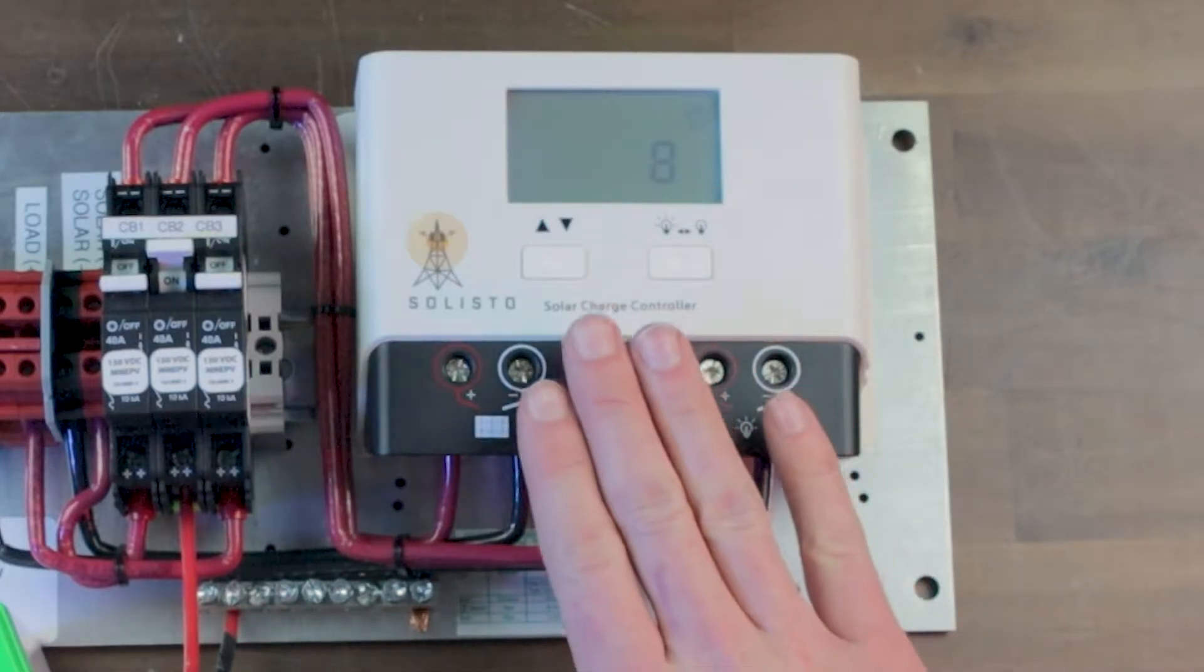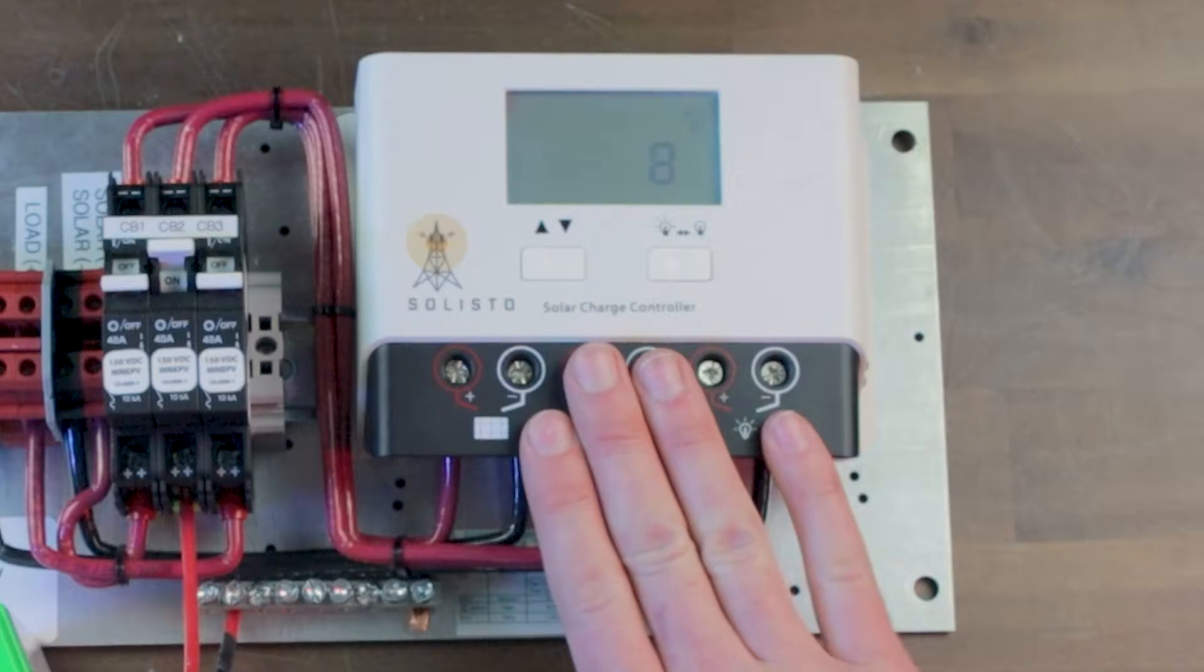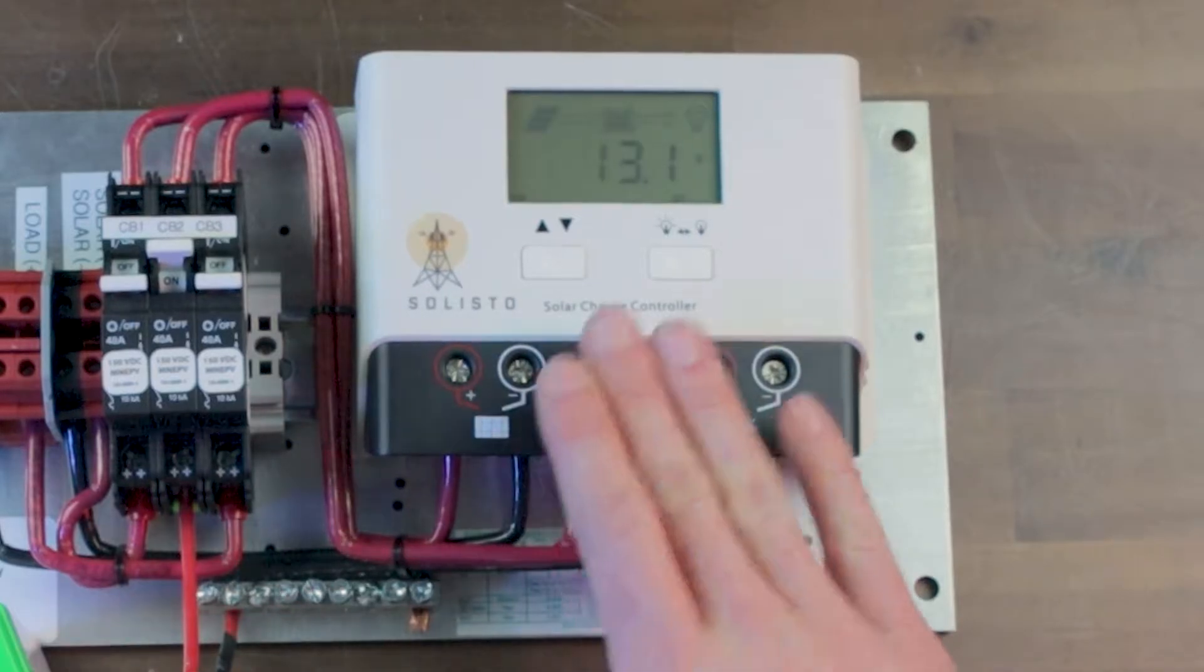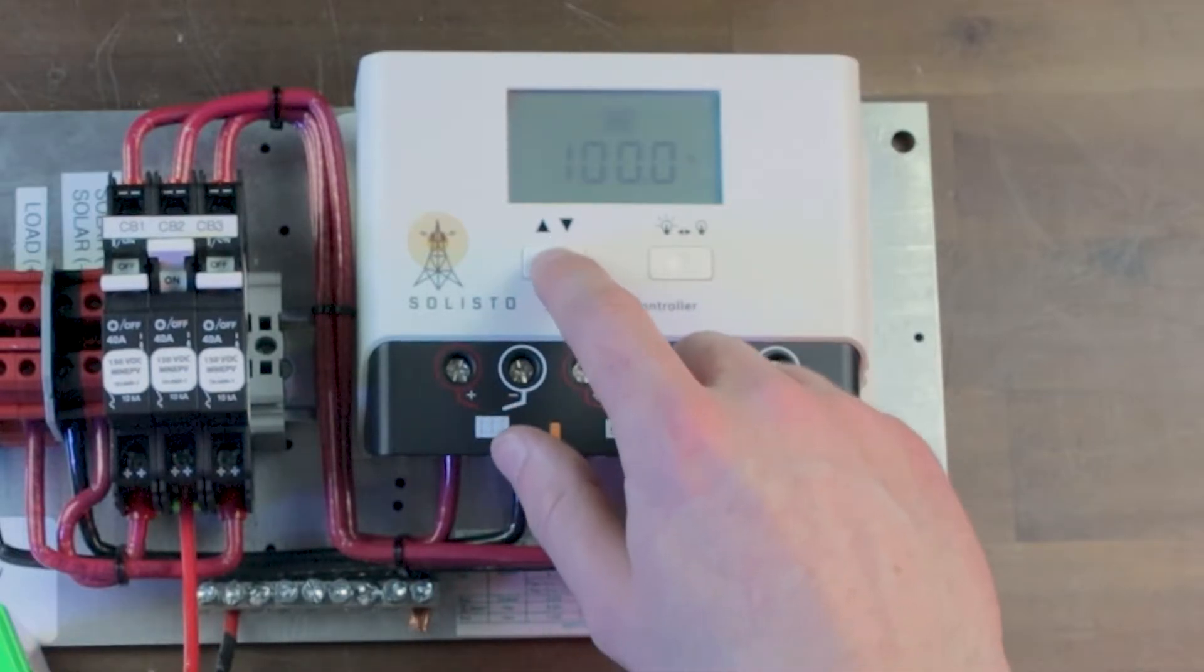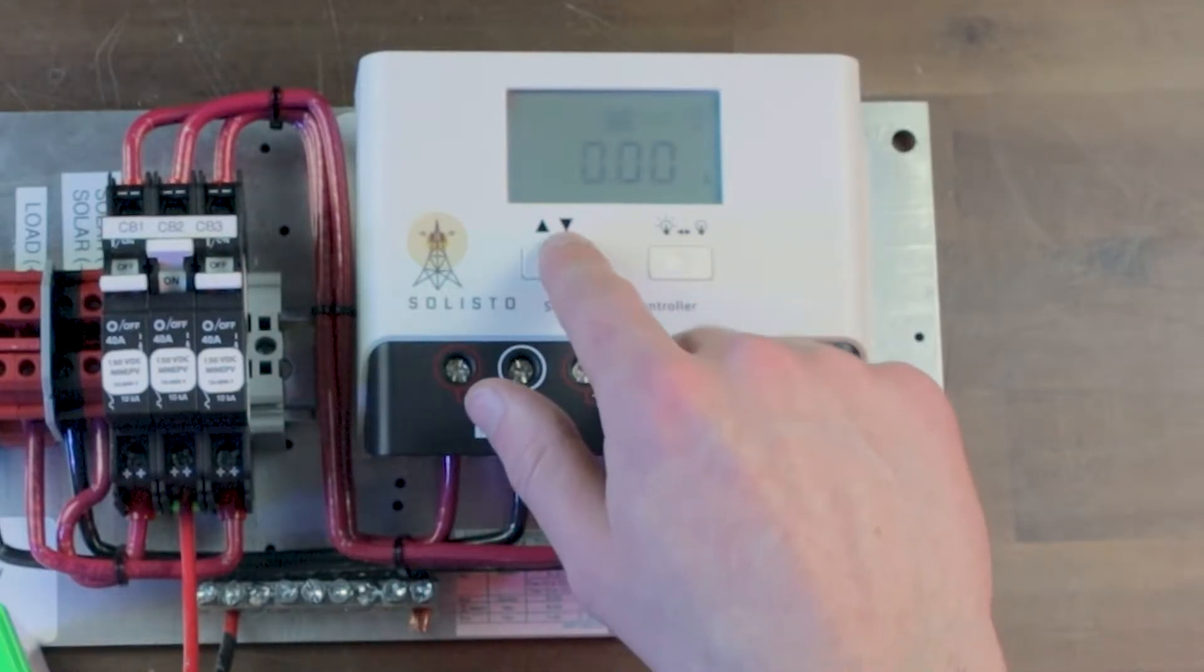However, if you purchase just the charge controller, again either the Sol 30 NC or the Sol 40 NC, it will ship in lighting control mode and you will have to go through this process.